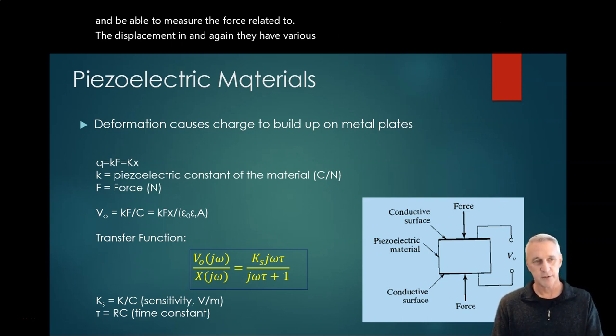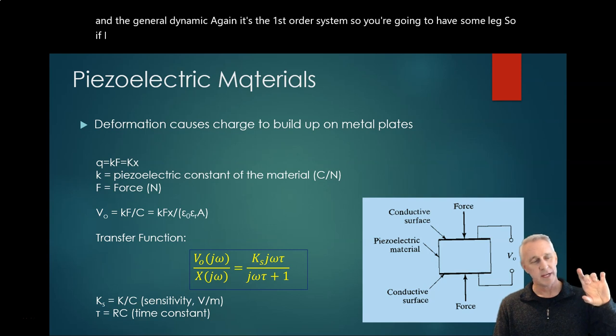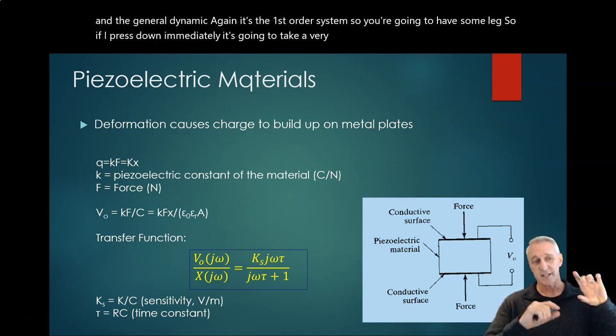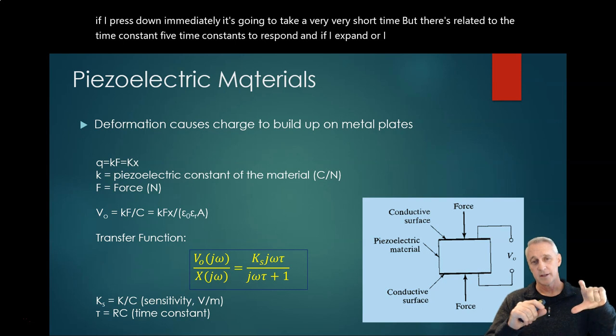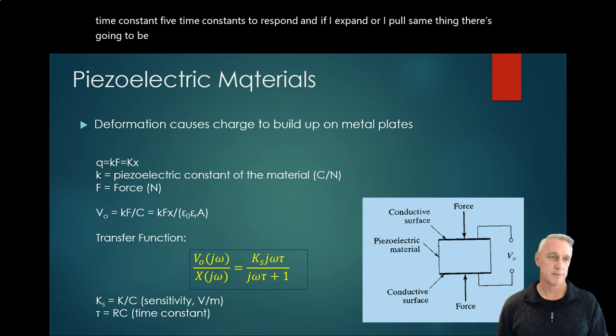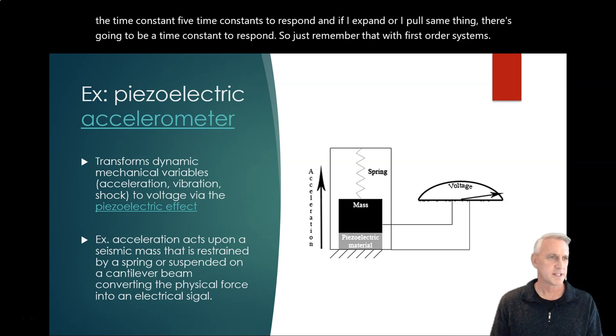And again, they have various sensitivities. These are the general equations of the general dynamic - again, it's a first order system, so you're going to have some lag. So if I press down immediately, it's going to take a very short time, but there's related to the time constant - five time constants to respond. And if I expand or I pull, same thing - there's going to be a time constant to respond. So just remember that with first order systems.